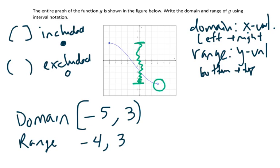The negative 4 came from this open circle, so it gets a parentheses. And the 3 came from this filled in circle, so it gets a bracket. So my domain is the interval bracket negative 5 comma 3 parentheses, and my range is the interval parentheses negative 4 comma 3 bracket.